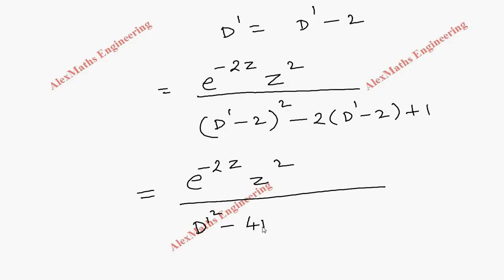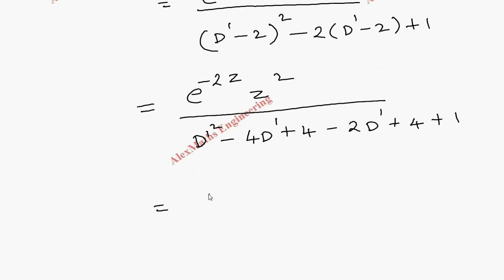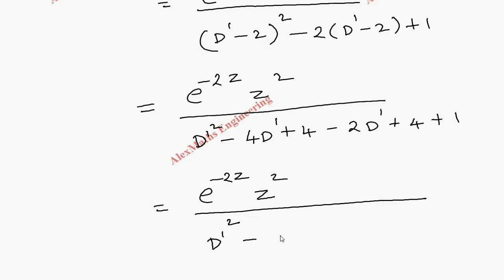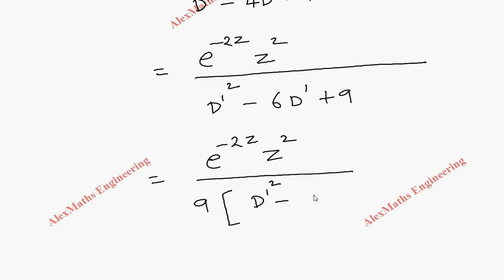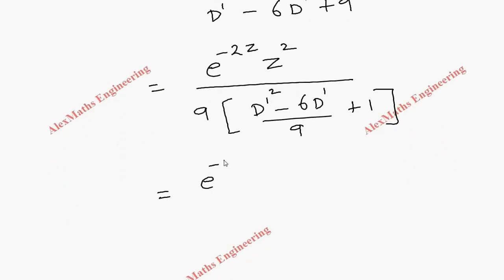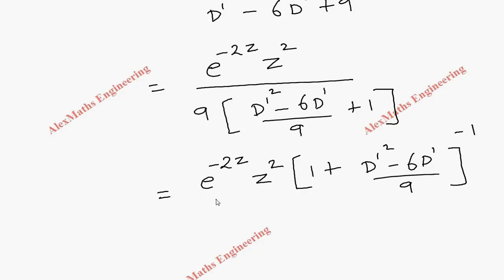So the denominator is D'² minus 6D' plus 9. We take 9 common from the denominator, giving e power minus 2z into z², divided by 9, times 1 over (1 plus (D'² minus 6D')/9). We carry the denominator term to the numerator as (1 plus (D'² minus 6D')/9) power minus 1, and we still have 9 in the denominator.